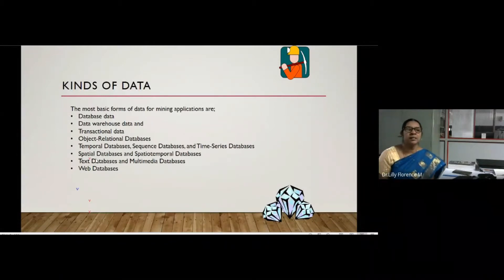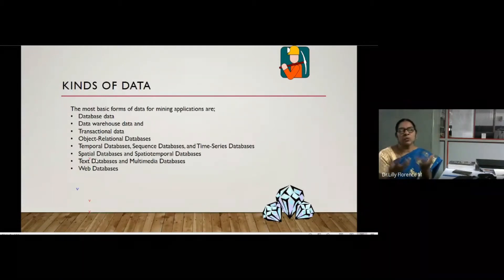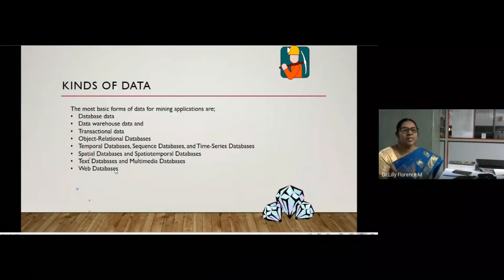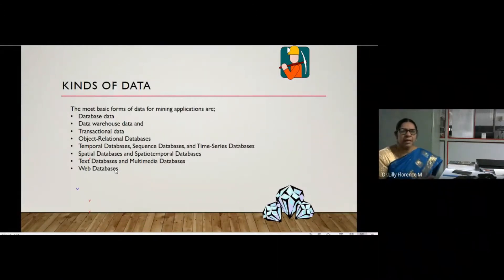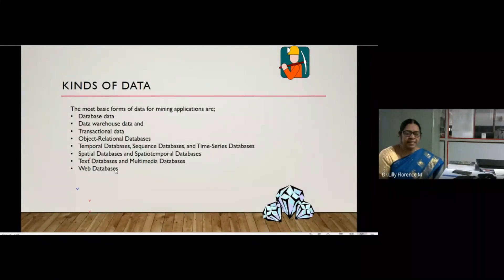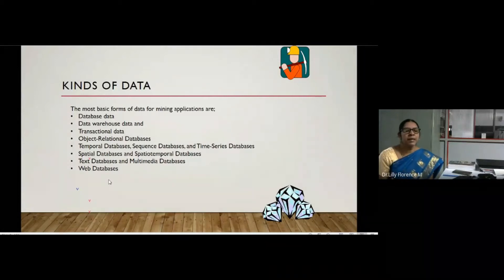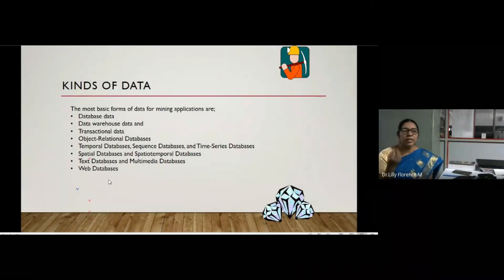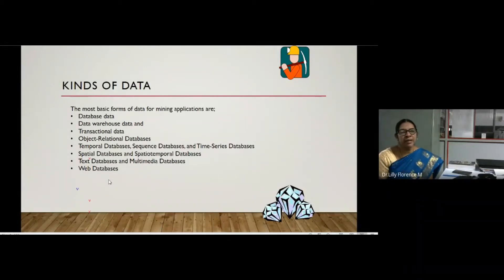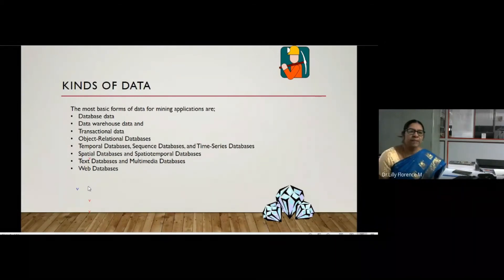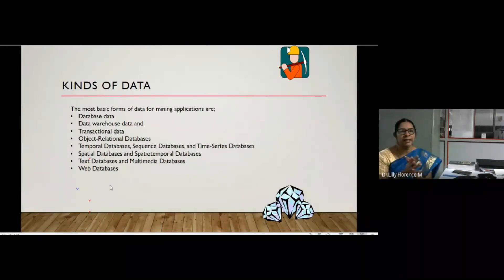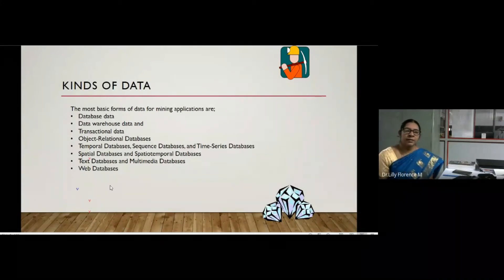Spatial databases contain geographical data such as maps and satellite images that can be used for mining. Text databases store data in unstructured format, and text mining is a separate research area for extracting patterns from text. Multimedia databases contain streaming data like images and animation — patterns can be generated from streaming data using multimedia databases.